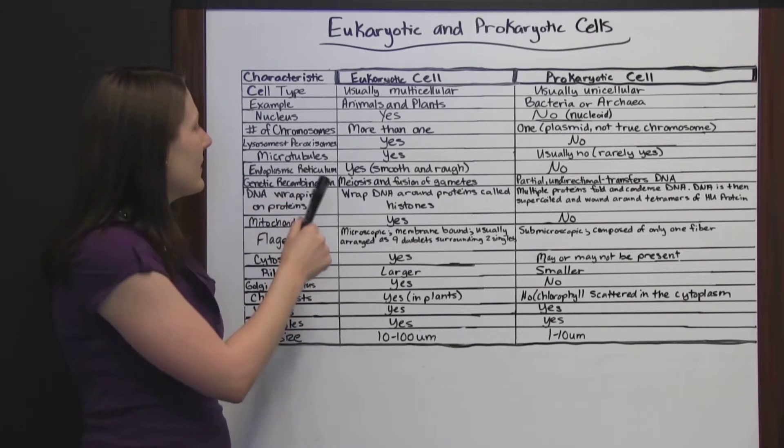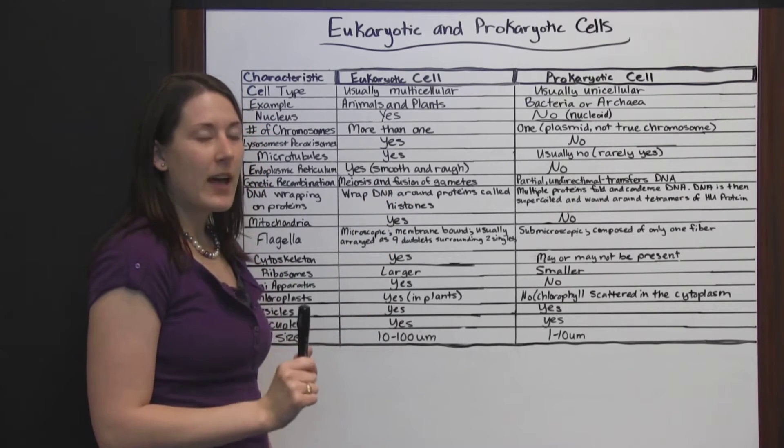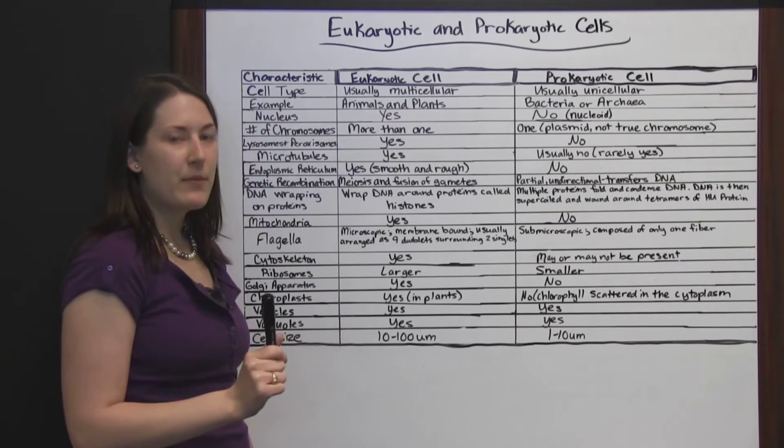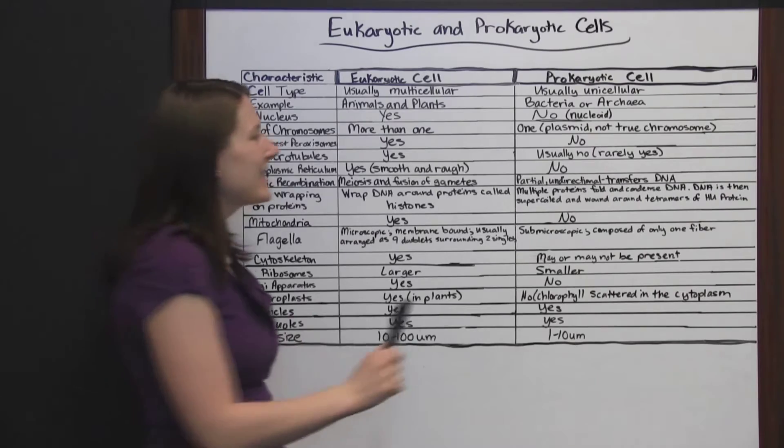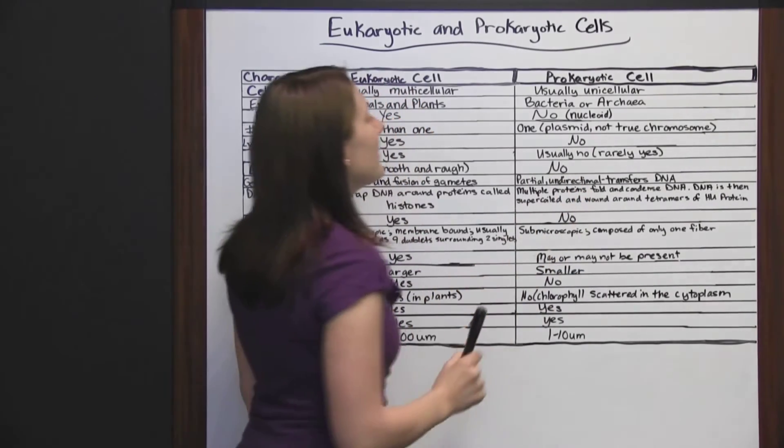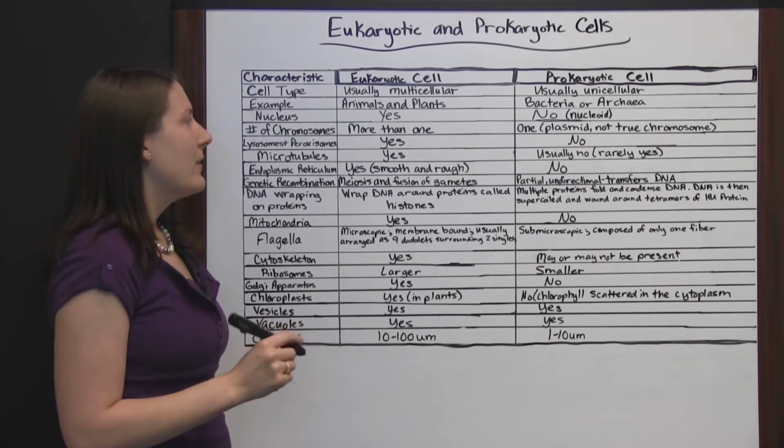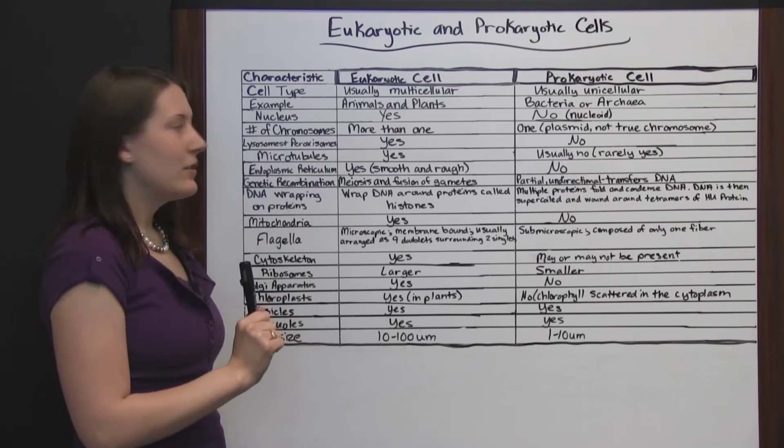Lysosomes and peroxisomes. Yes, eukaryotic cells will have those, and they will be membrane-bound. Prokaryotic cells will not have membrane-bound lysosomes and peroxisomes.